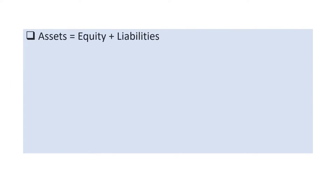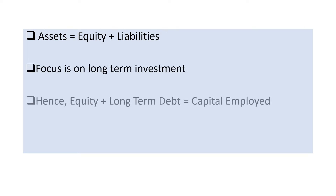In accounting, everything is determined by the ratio: assets equals equity plus liabilities. The focus to run a business is on the longer term, so when we look at capital employed in a business, we're looking at how much equity and long-term debt or long-term finance we have raised in the business.